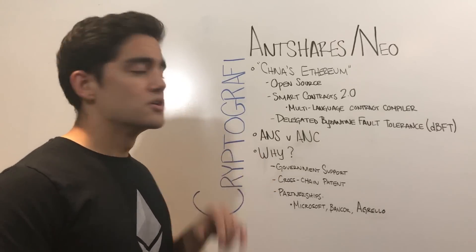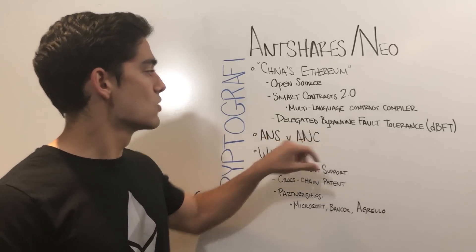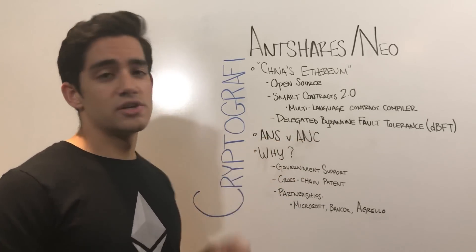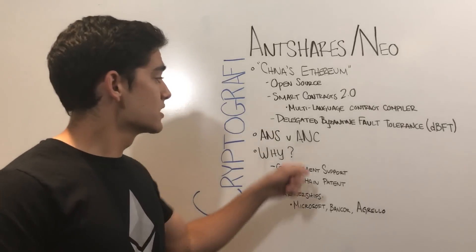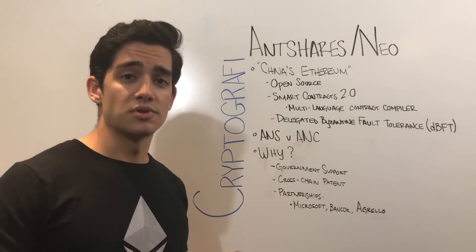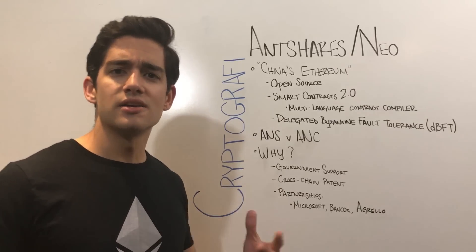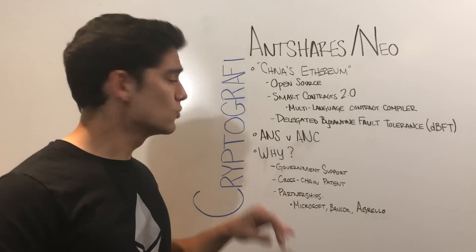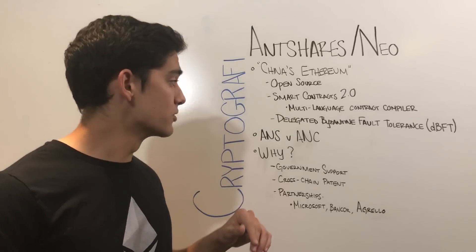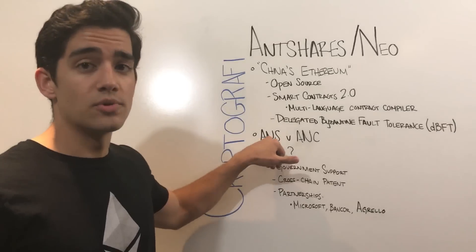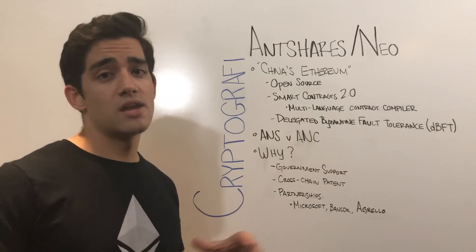Next, you have two different types of coins with NEO. You have currently AntShares and AntCoins. You buy AntShares on your exchange right now, be it Bitrex or anywhere else, and AntCoins are what you actually use to engage with the platform, with the applications — the functional token, kind of like GAS in Ethereum. What's important to note about both of these is that there is a fixed supply of a hundred million of both. And although AntShares are indivisible, which means you can't break them up into smaller tokens, AntCoins can be.